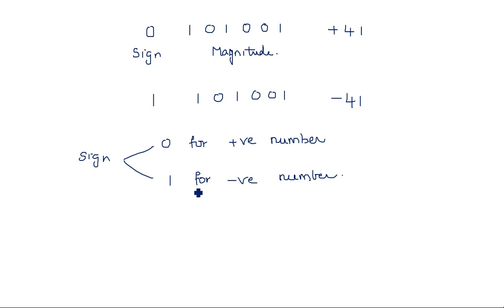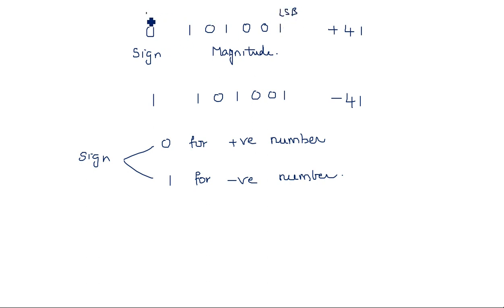The most significant bit — the leftmost bit — represents the sign. If this MSB is 1, then it is a negative number. If this MSB is 0, then it is a positive number. Most significant bit is always on the left-hand side, and the least significant bit is always on the right-hand side. So the leftmost bit represents the sign.